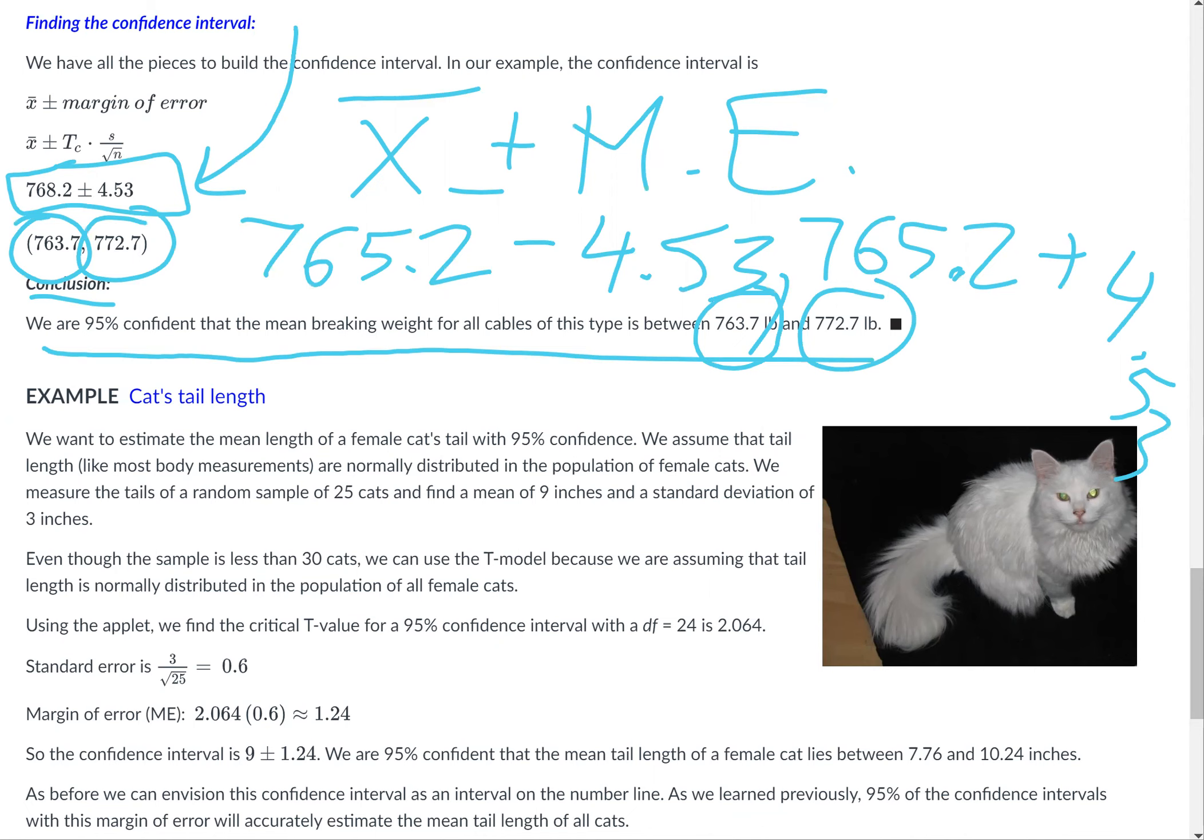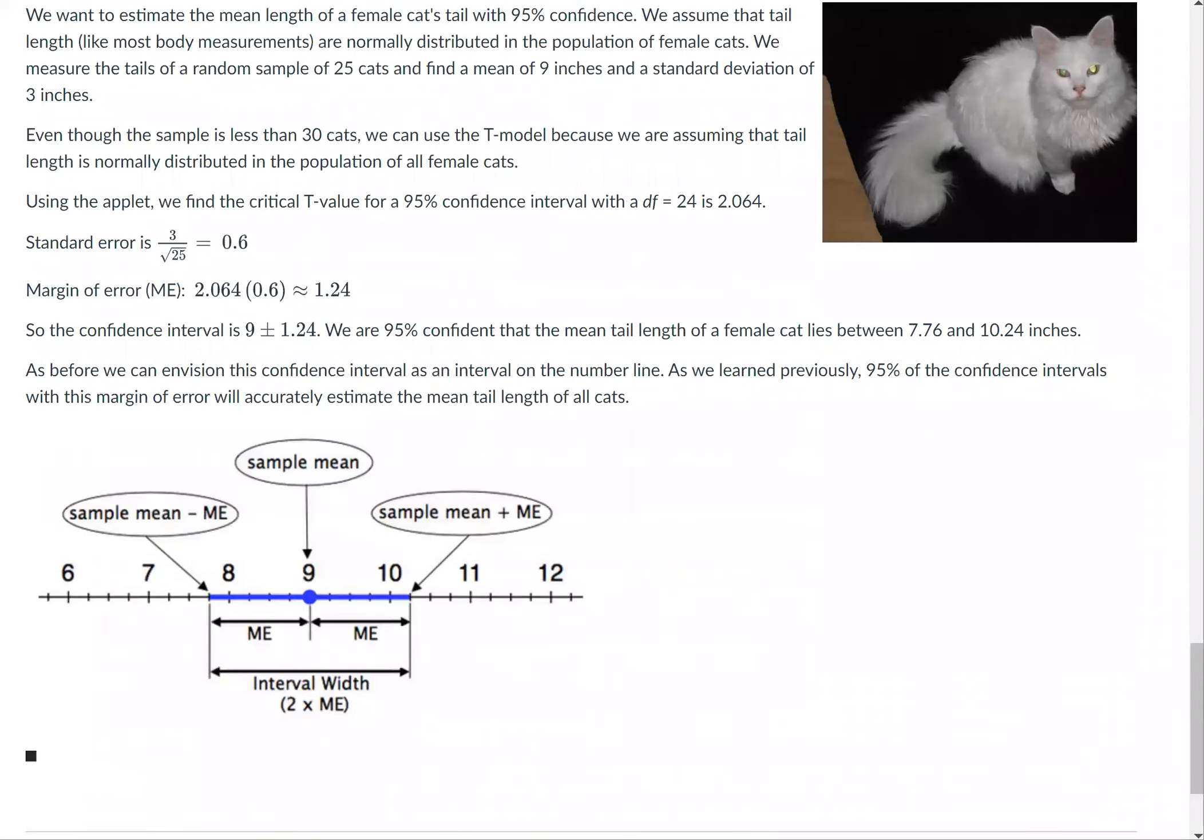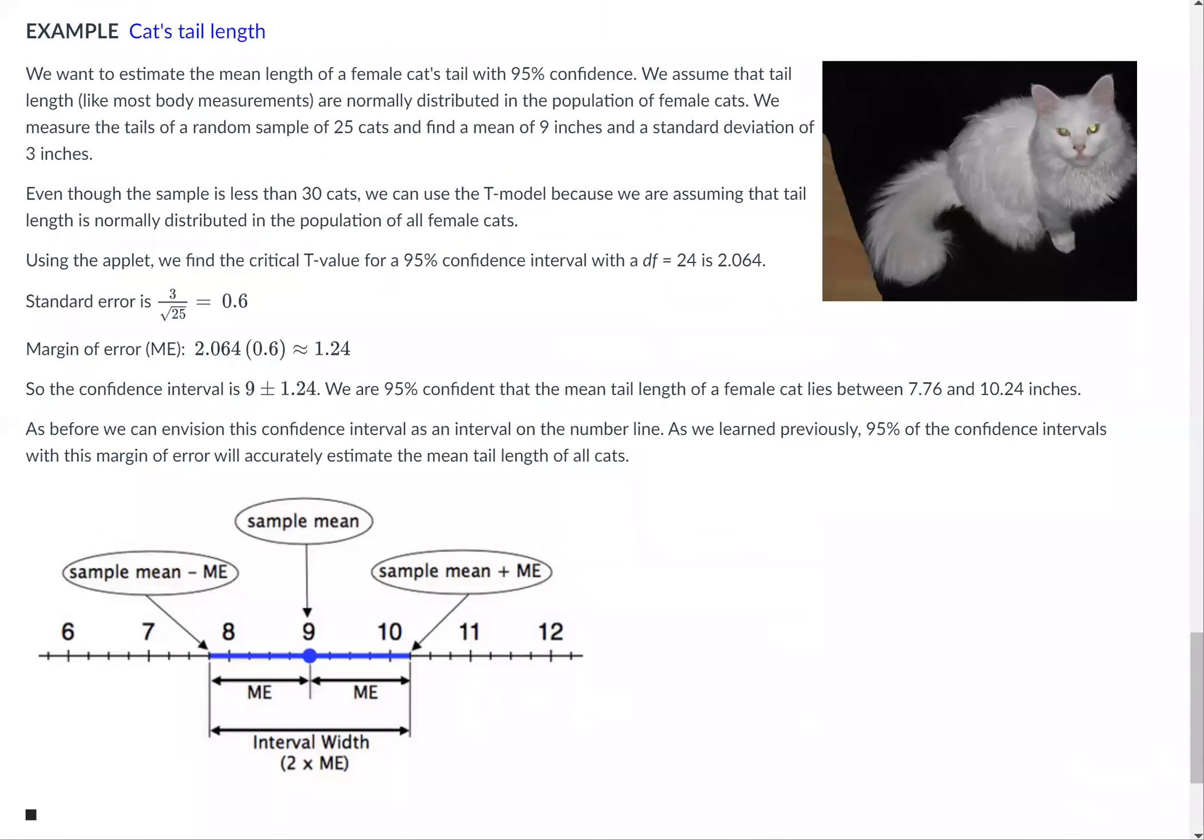Now we'll look at another example: cat's tail length. We want to estimate the mean length for a female cat's tail with 95% confidence. We assume that tail length, like most body measurements, is normally distributed in the population of female cats. We measure the tails of a random sample of 25 cats and find a mean of 9 inches and a standard deviation of 3 inches.